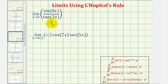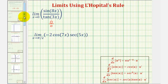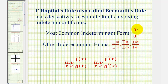Because of this indeterminate form, we can apply L'Hôpital's Rule to help us determine this limit. If we have a limit that fits one of these indeterminate forms, then the limit of this quotient is equal to the limit of the quotient of the derivatives of f and g.